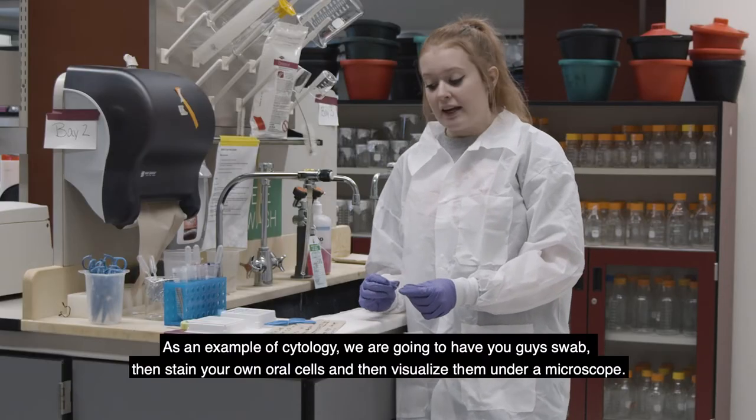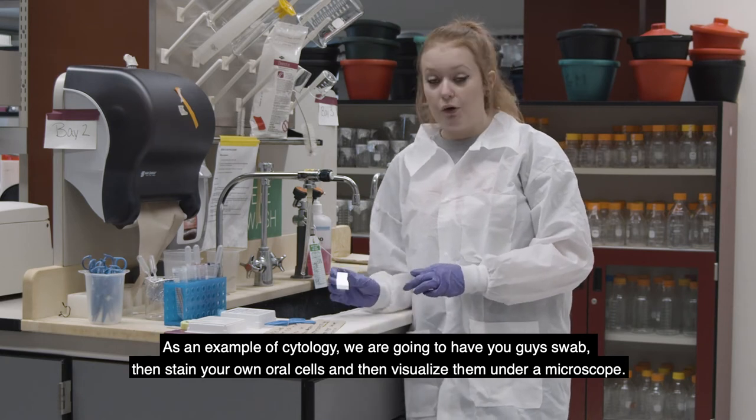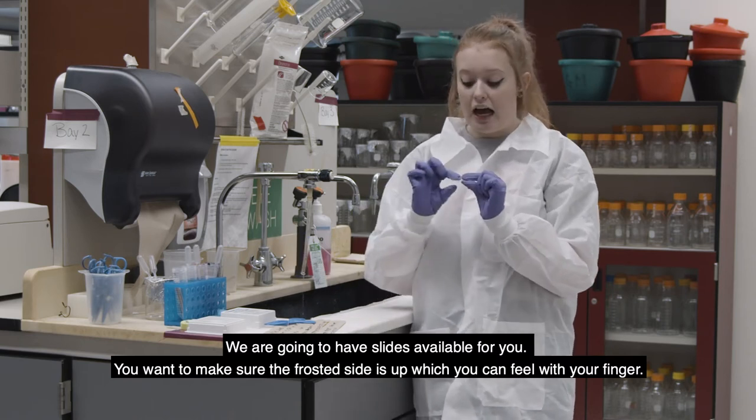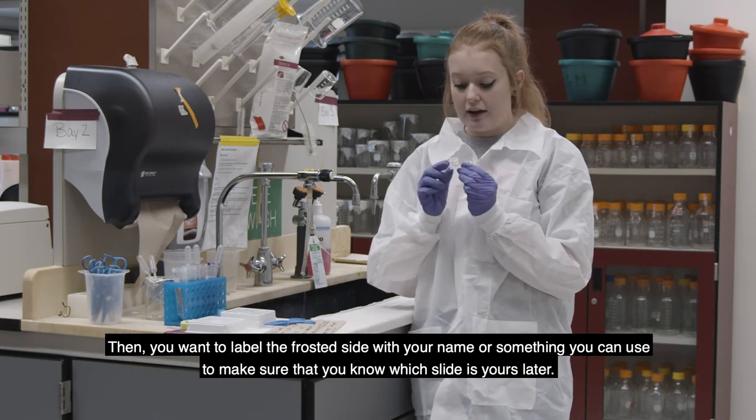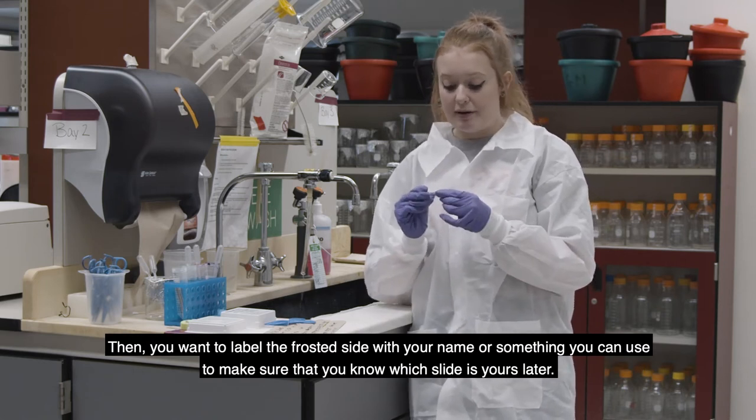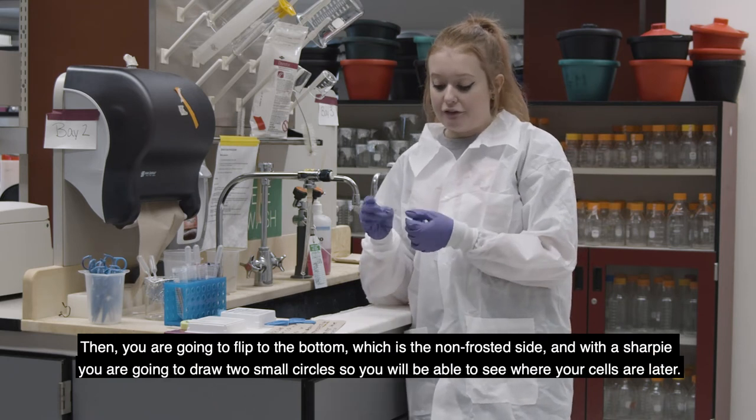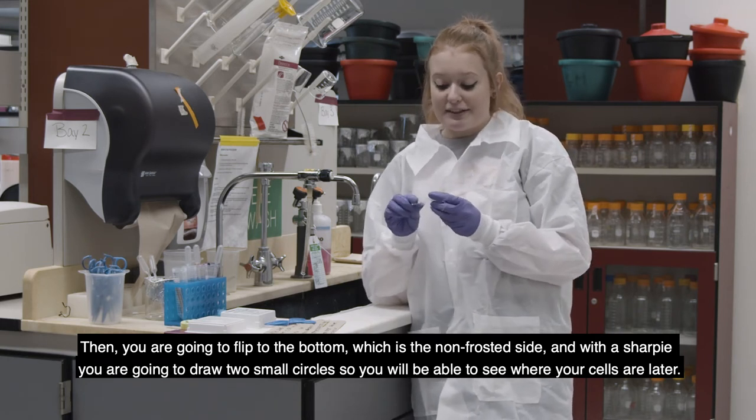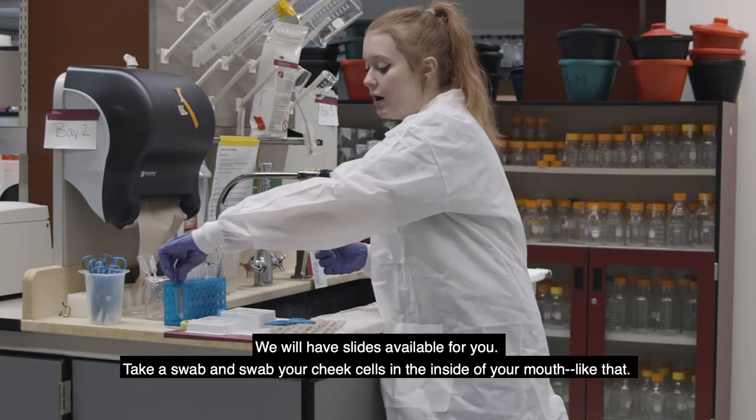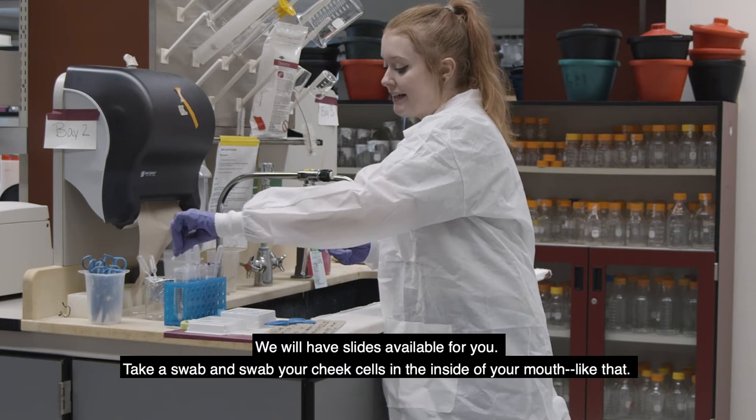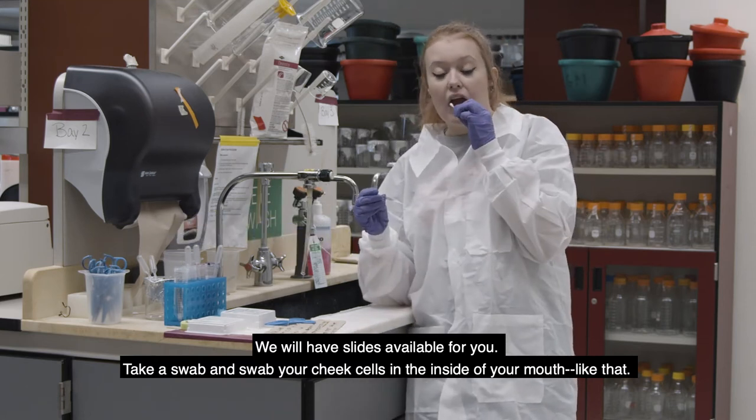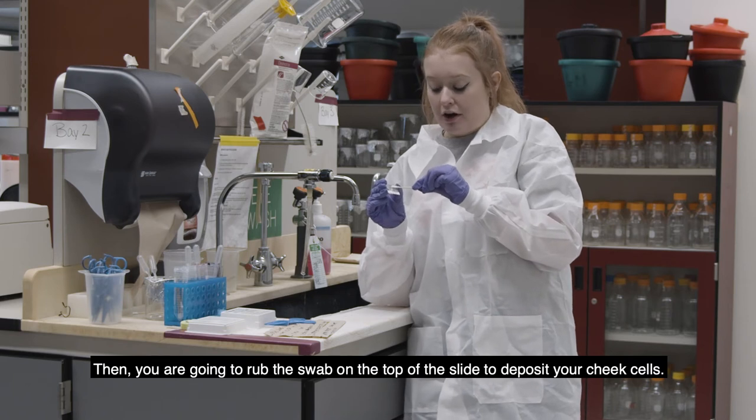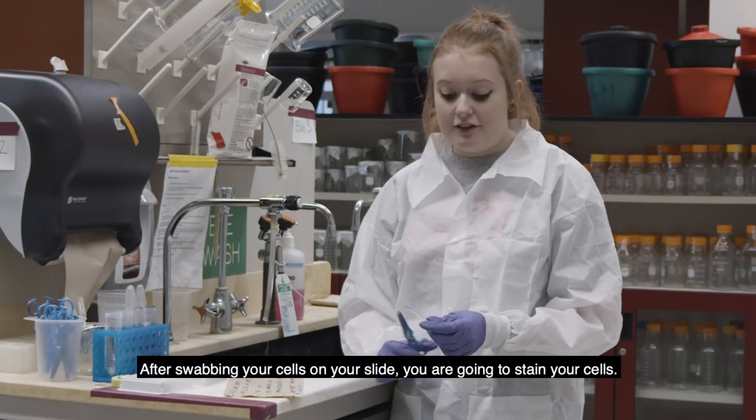As an example of cytology, we're going to have you guys swab and then stain your own oral cells and then visualize them on the microscope. So we're going to have slides available for you. So you want to make sure the frosted side is up, which you can just kind of feel with your finger. And then you want to label the frosted part with your name or something that you can use to make sure that you know which slide is yours later. And then you're going to flip to the bottom, which is the non-frosted slide. And with a sharpie, you're just going to draw two small circles so you'll be able to see where your cells are later. And then we will have swabs available for you. And then you're just going to take the swab and then swab your cheek cells in the inside of your mouth like that. And then you're just going to rub the swab on the top of the slide to deposit your cheek cells.